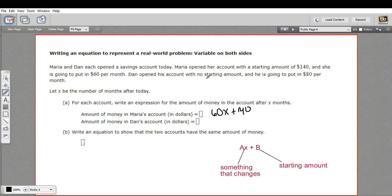Now, Dan opened his account with no starting amount, so the B is zero, so we don't even need to write it. We don't have that part. But we do have the A times X part. He's going to put in $80 per month, so for Dan, this is 80 times X.